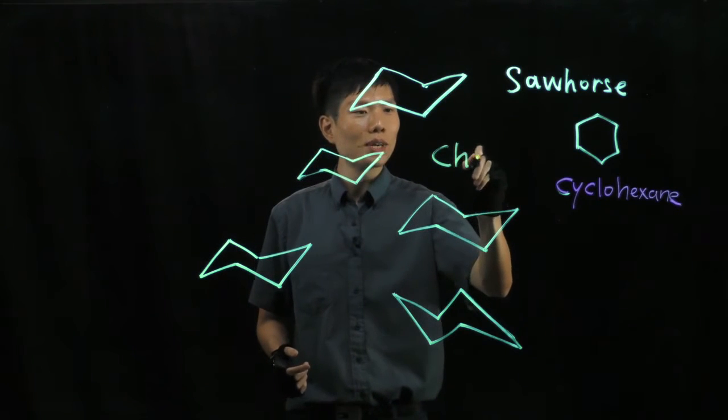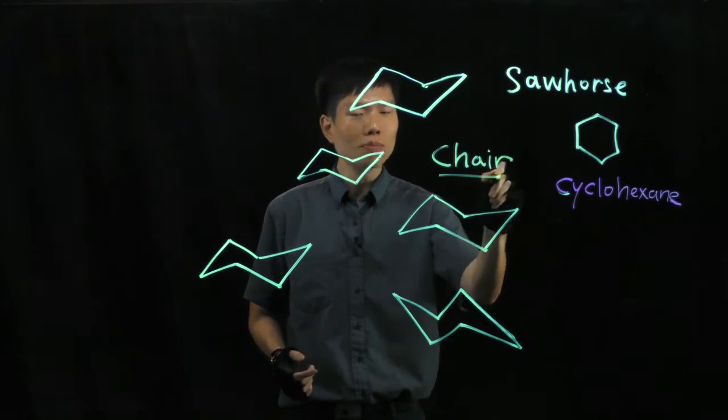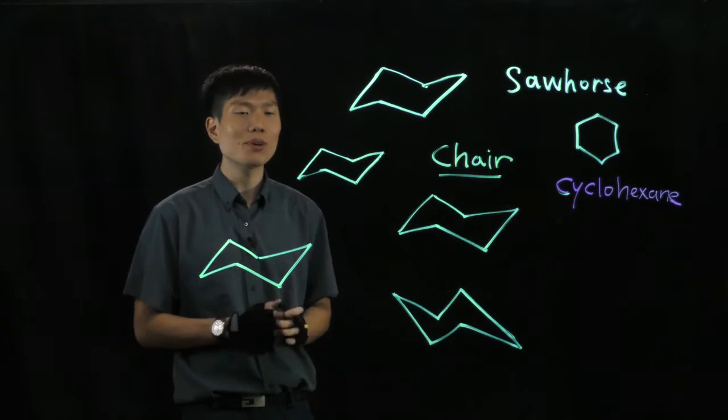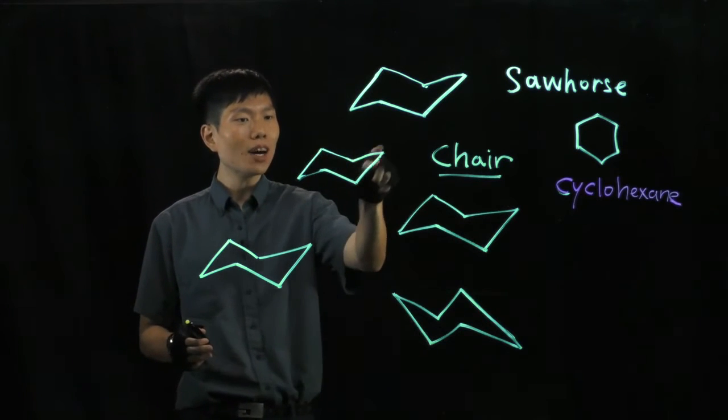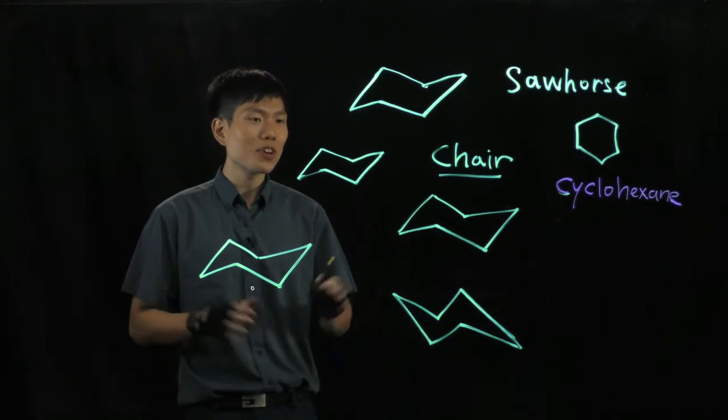This is your chair conformer, do not forget, the chair conformer of cyclohexane, which is the most stable, because we have up, down, up, down of the carbons, they will be separated.